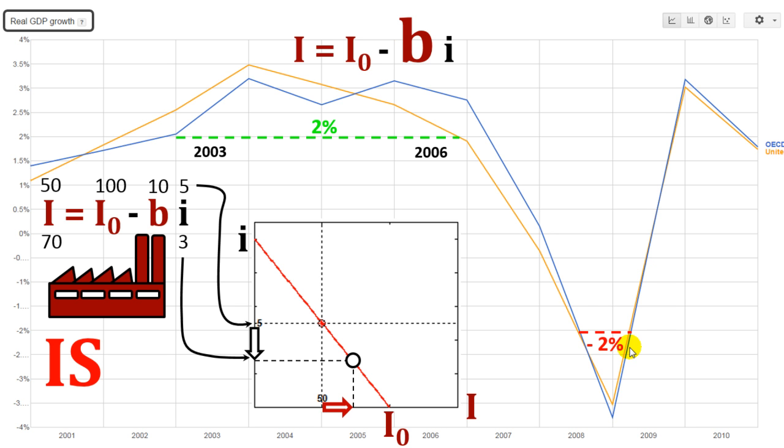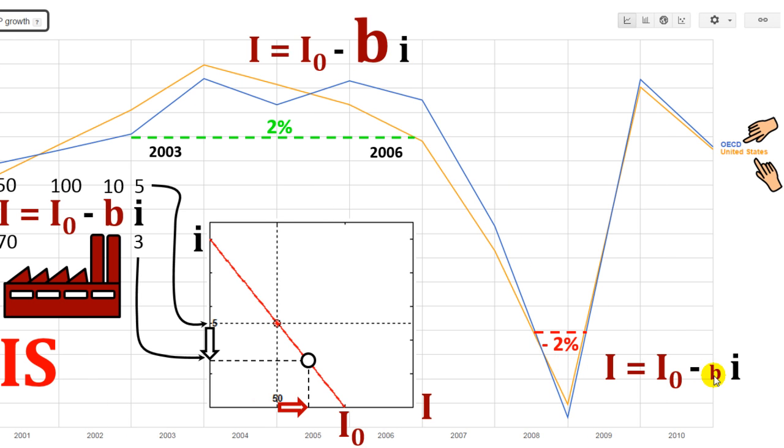Whereas from 2008 to 2009, the real GDP growth was very low, so this b should be small representing that investment was very insensitive to changes in interest rate. For example, in Argentina this b was close to zero, meaning that it doesn't matter how much the interest rate goes down, the level of investment is not going to be really affected.